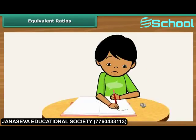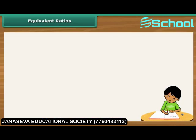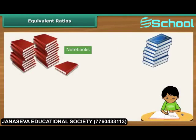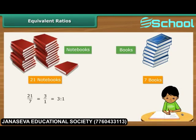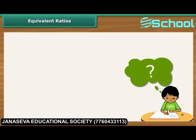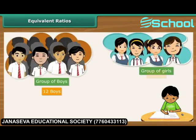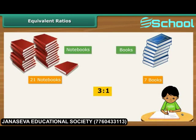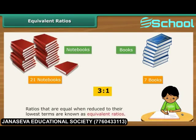Equivalent ratios. Ritesh is learning to calculate ratios and is enjoying it, but there is one thing that is confusing him. He first calculated the ratio of boys to girls in his class as 3 is to 1. He then calculated the ratio of notebooks to books in his bag, which also works out to be 3 is to 1. Ritesh wonders: can two ratios be the same? Yes, they can be. Boys are 3 times more than girls in Ritesh's class, and the notebooks are 3 times more than the books in Ritesh's bag. Ratios that are equal when reduced to their lowest terms are known as equivalent ratios.